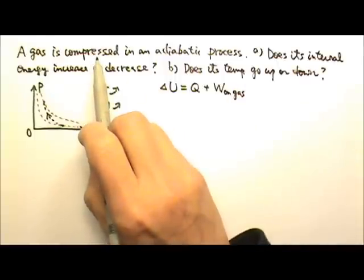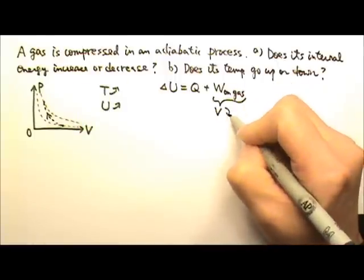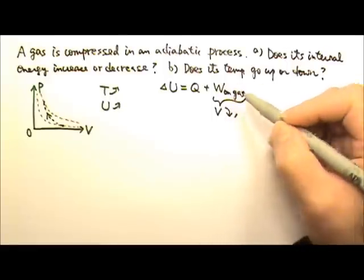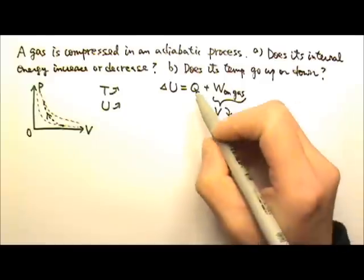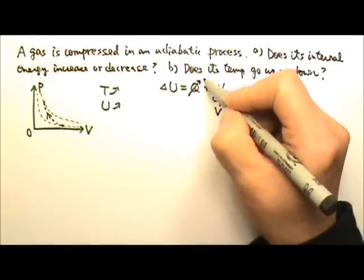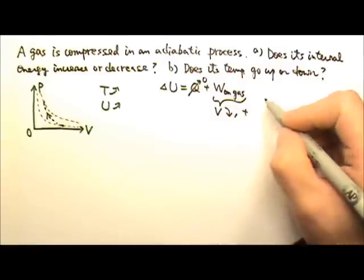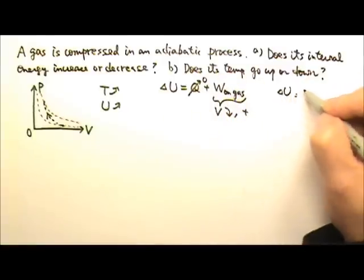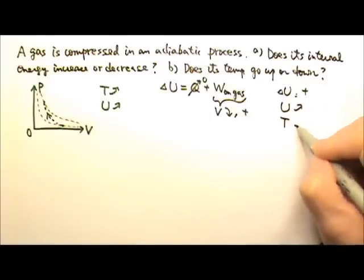If we're compressing the gas, that means the volume of the gas decreases, so the work done on the gas should be positive. And because it's an adiabatic process, Q is zero. The work being positive means delta U must be positive. That means U increases and the temperature increases.